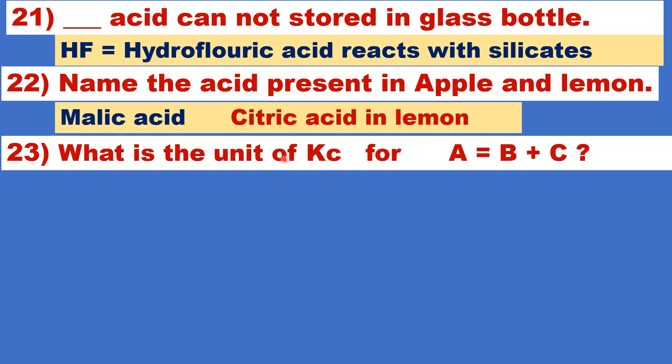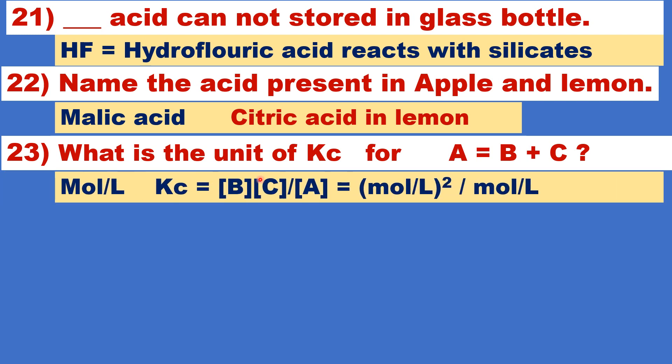What is the unit of Kc equilibrium constant for this reaction A gives B plus C? It is moles per liter. The unit is moles per liter. How it is obtained? Kc equilibrium constant is equal to product, concentration of product divided by concentration of reactant. Let us write the unit moles per liter. Moles per liter whole square divided by moles per liter. So moles per liter, one moles per liter cancel. The answer is moles per liter.